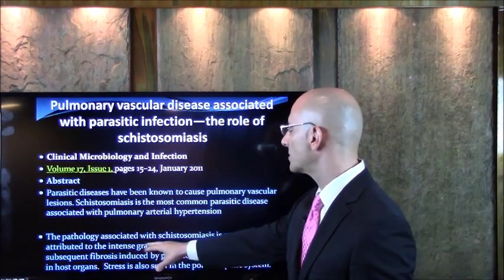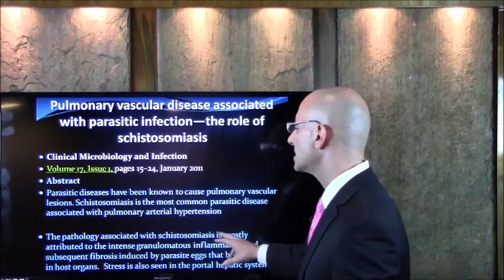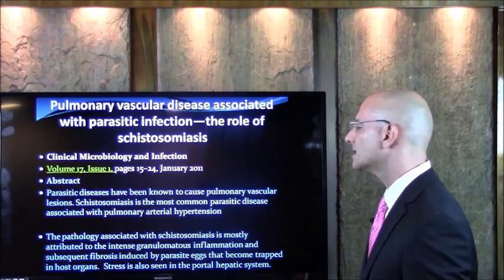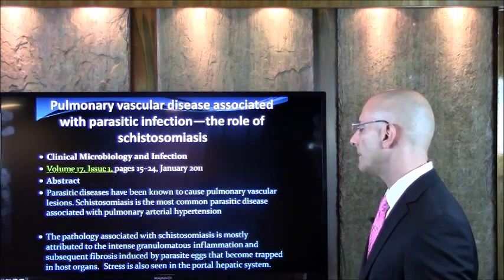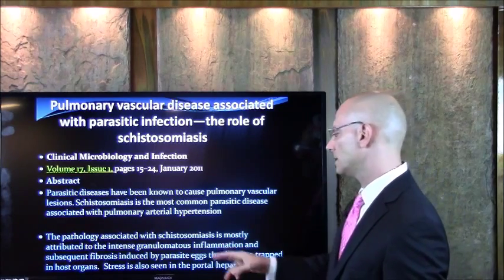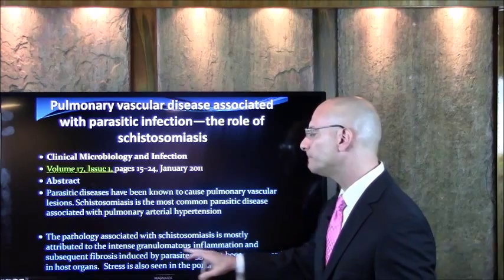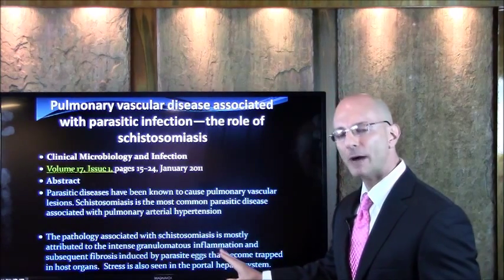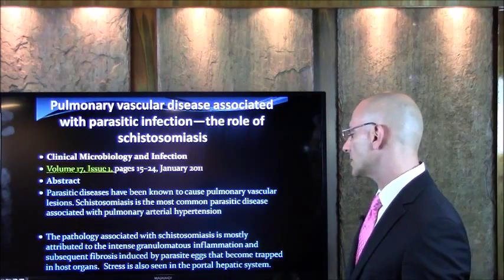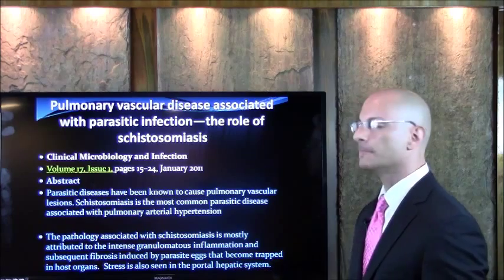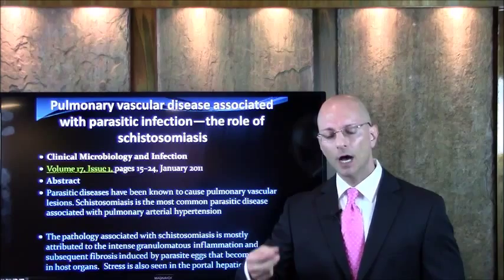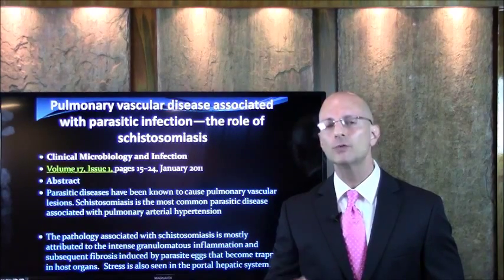The pathology associated with schistosomiasis is mostly attributed to the intense granulomatous inflammation and subsequent fibrosis induced by parasite eggs that become trapped in host organs. Inflammation and fibrosis are caused by parasitic eggs and parasitic infection. Stress is also seen in the portal hepatic system — meaning stress, inflammation, and breakdown in the liver and in the blood vessel that goes into the liver.